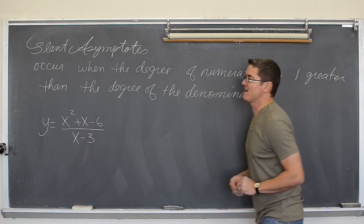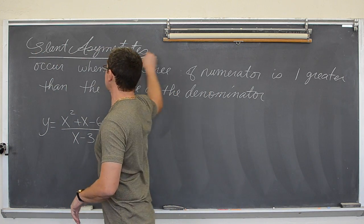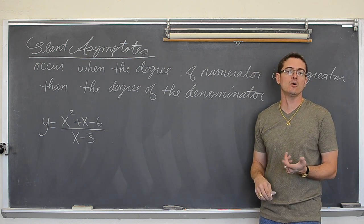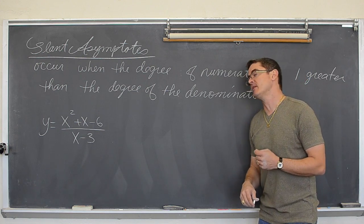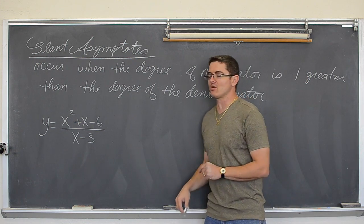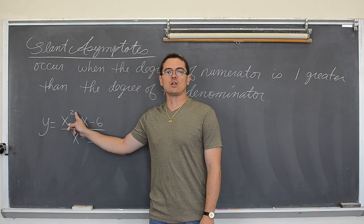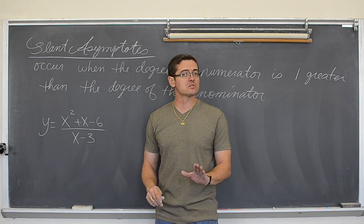We are going to find slant asymptotes. We just got done talking about vertical asymptotes, that is where the denominator equals zero and it does not factor out. I just covered a lecture on finding horizontal asymptotes. If the top degree is larger than the bottom, there is no horizontal asymptote.